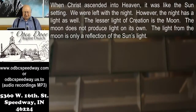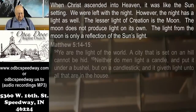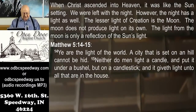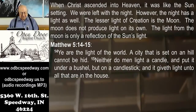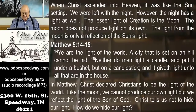The lesser light of creation is the moon. The moon does not produce light on its own — the light from the moon is only a reflection of the sun's light. Matthew 5:14-15, Jesus — the one who said he was the light of the world — says, 'Ye are the light of the world. A city that is set on a hill cannot be hid, neither do men light a candle and put it under a bushel, but on a candlestick, and it giveth light unto all that are in the house.' In Matthew, Christ declared Christians to be the light of the world, but they are like the moon — they cannot produce their own light, but reflect the light of the Son of God.